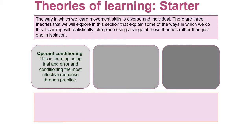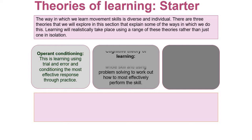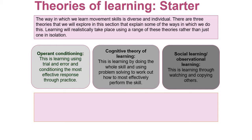The three learning methods, which hopefully are familiar to you from the work on EverLearner: we've got operant conditioning, which is learning using trial and error and then conditioning the most effective response through practice; the cognitive theory of learning, which is learning by doing the whole skill and using problem solving to work out how to most effectively perform the skill; and finally social learning or observational learning, which is learning through watching and copying others.